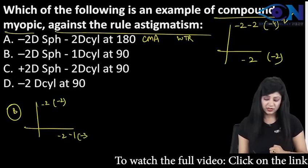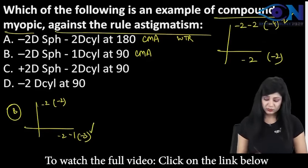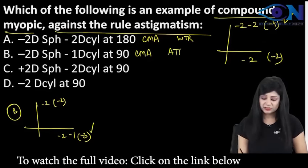So this becomes minus 2 and minus 3. So this is your again compound myopic astigmatism and because minus 3 is more so this is against the rule astigmatism.